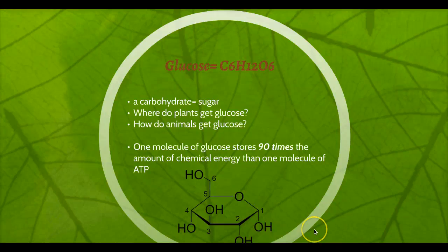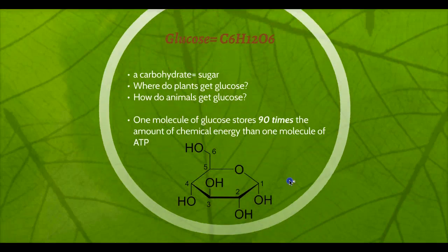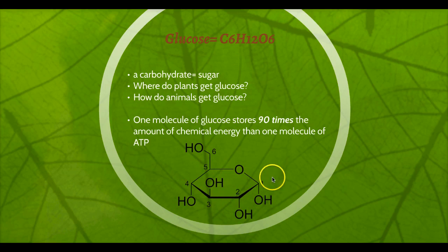One molecule of glucose can store up to 90 times the amount of chemical energy that a molecule of ATP has. So glucose is much longer-term in energy storage compared to the ATP molecule. This right here is the actual structure of a glucose molecule — it's like a six-sided ring with some other atoms coming off of it. It's actually a 3D structure, but we tend to draw it as a six-sided ring.